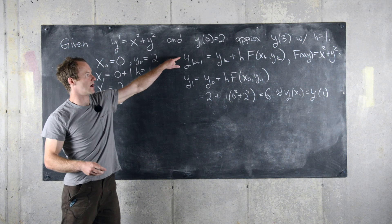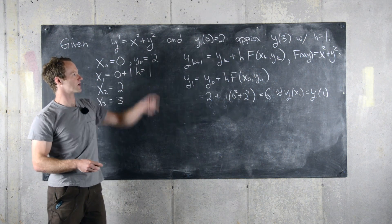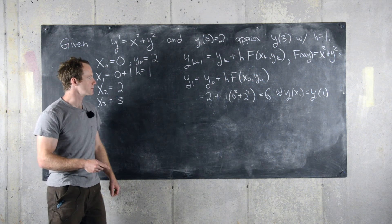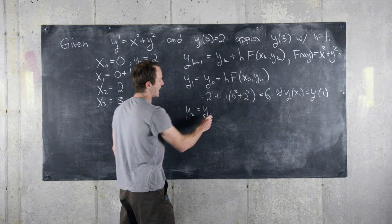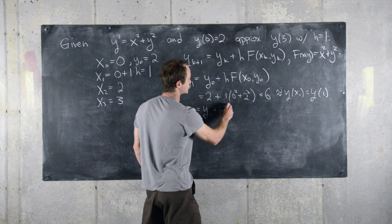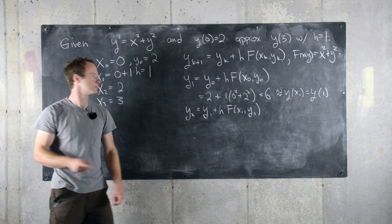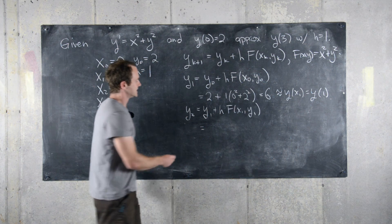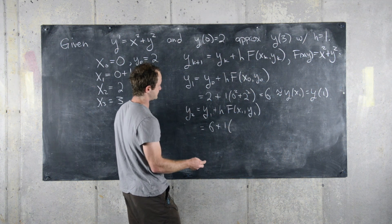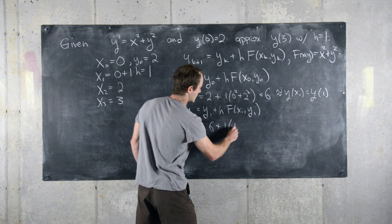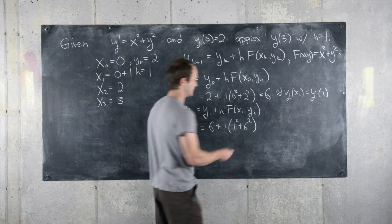So what we'll do is apply this iterative formula a few more times, and then we'll have an approximation for y of three. So next we'll have y of two equals y of one plus h, f of x one, y one. So this is equal to six plus one times one squared plus six squared.